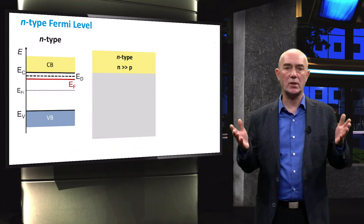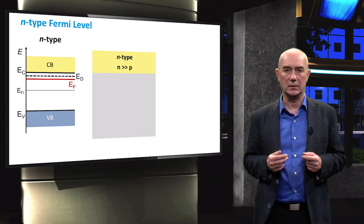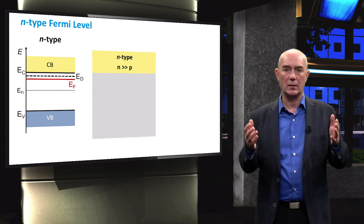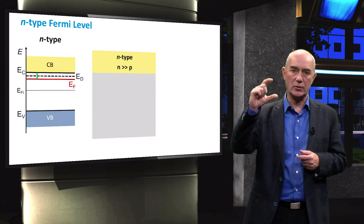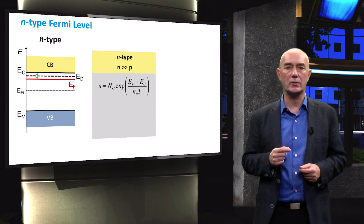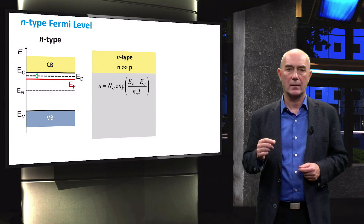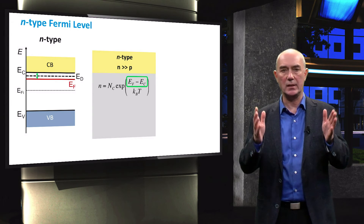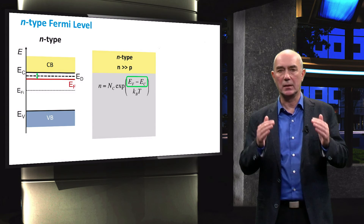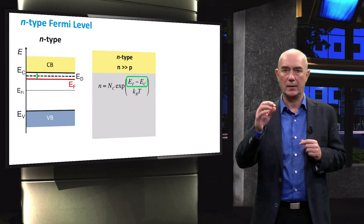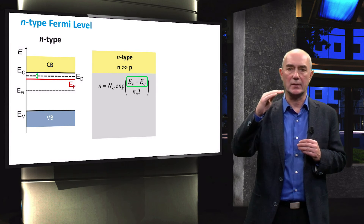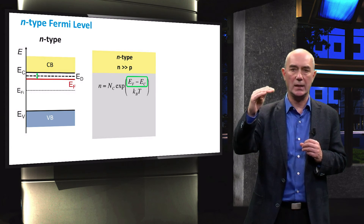From the concentrations of charge carriers, we can calculate the position of the Fermi level. Here we see the band diagram of an N-type semiconductor. We are interested in the difference between the conduction band and the Fermi level. We calculate it by recalling the equation from a previous video. We can see that the quantity EF minus EC is present in the equation. We expect that the Fermi level is below the edge of the conduction band EC, so this quantity should be negative — the Fermi level position is negative with respect to the edge of the conduction band.